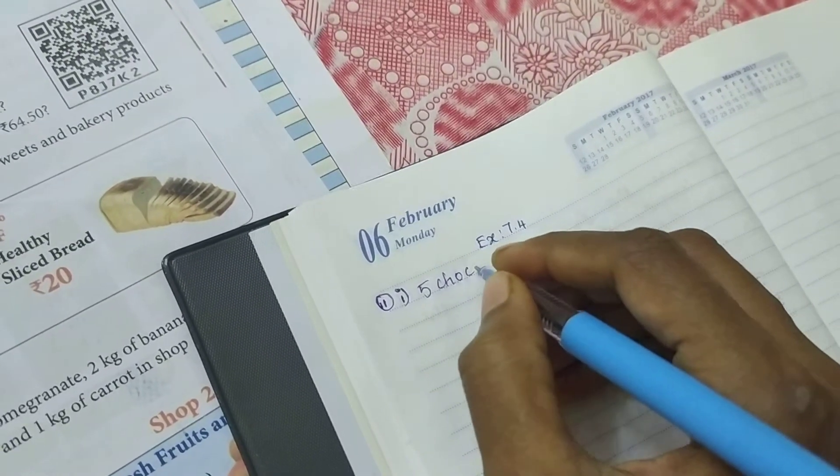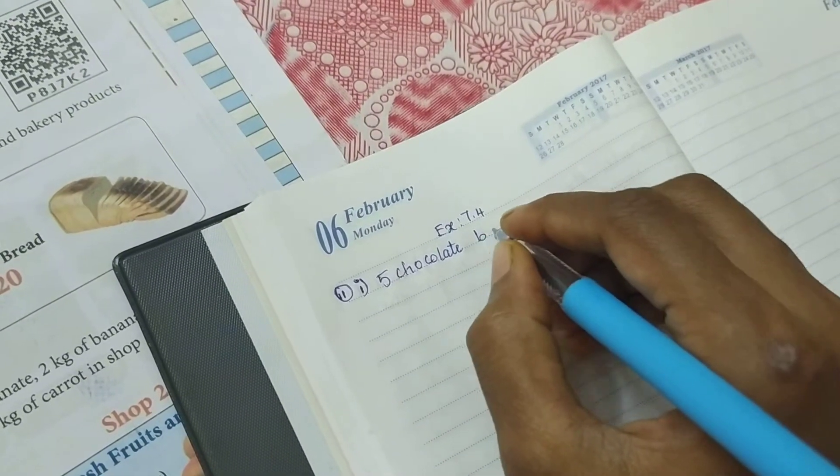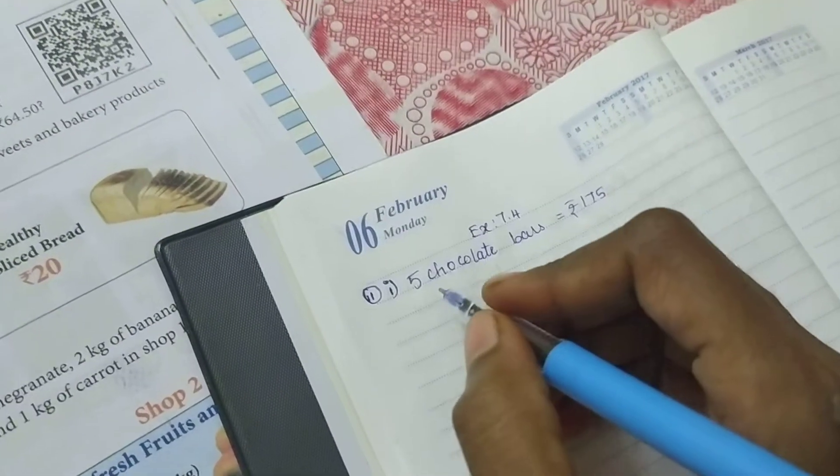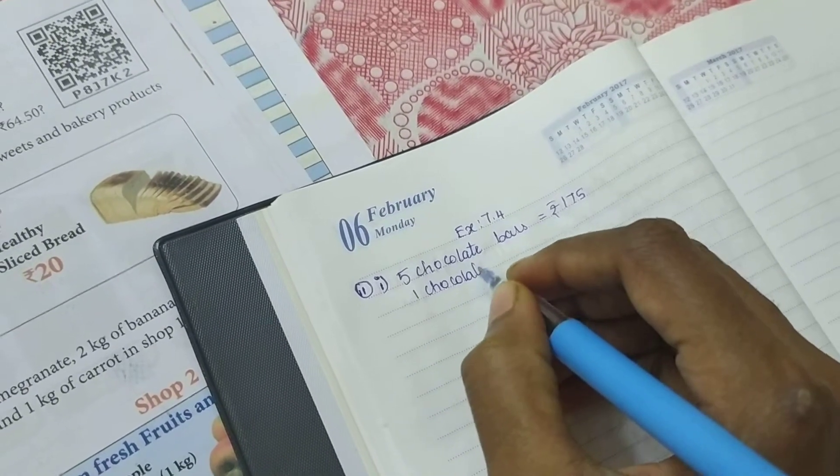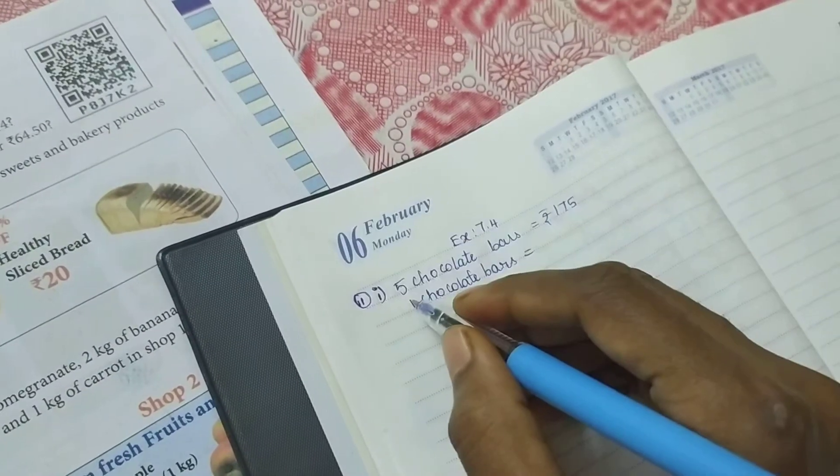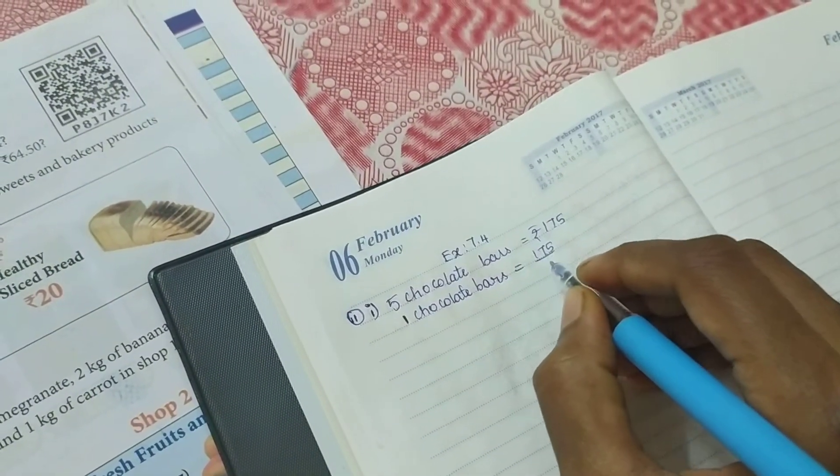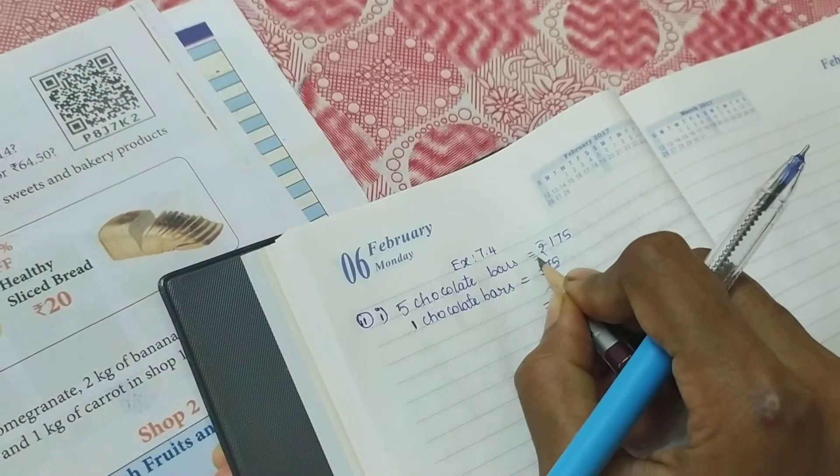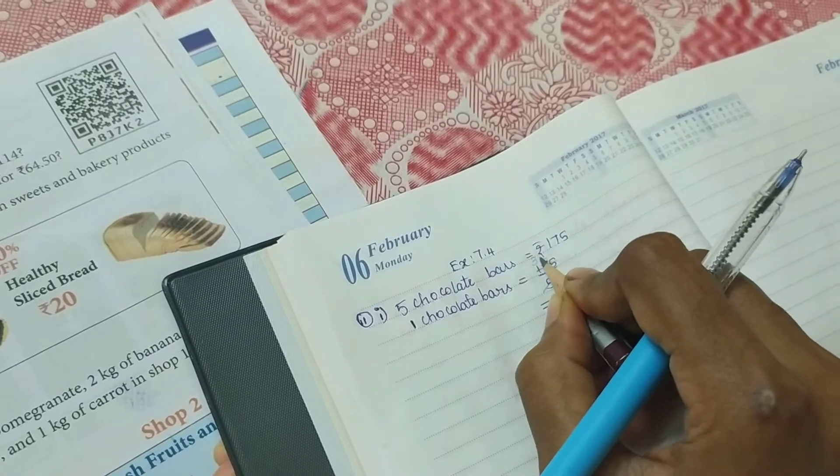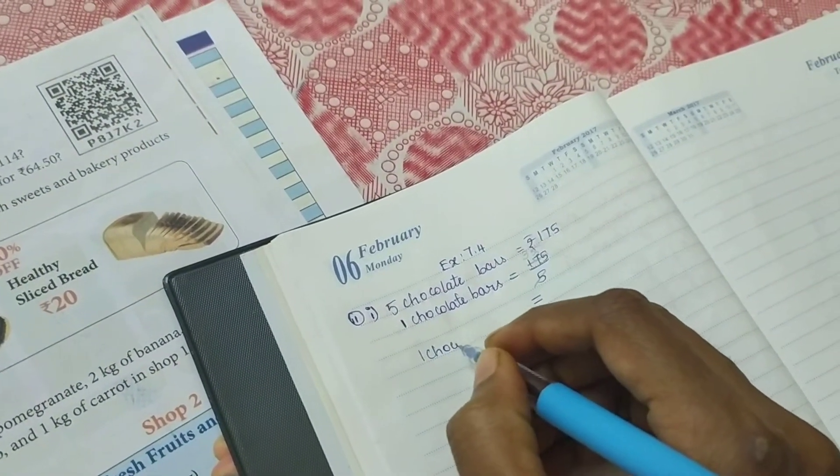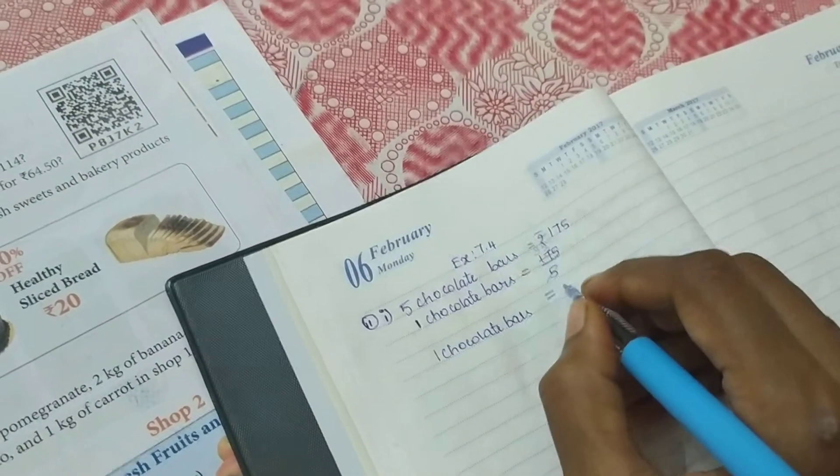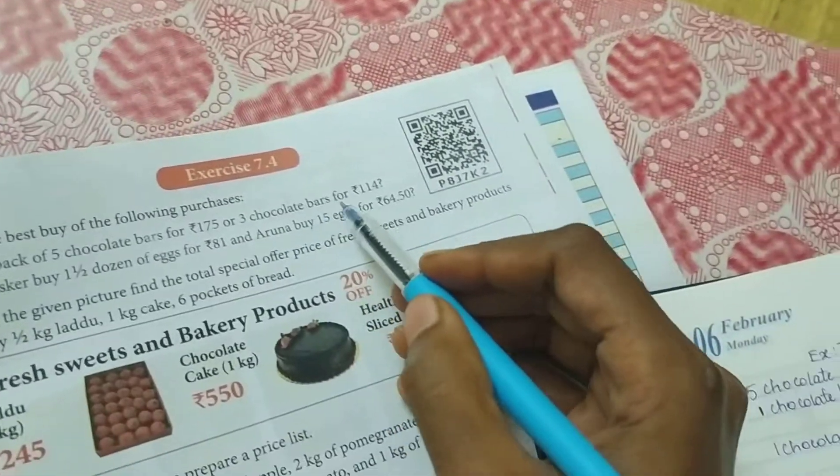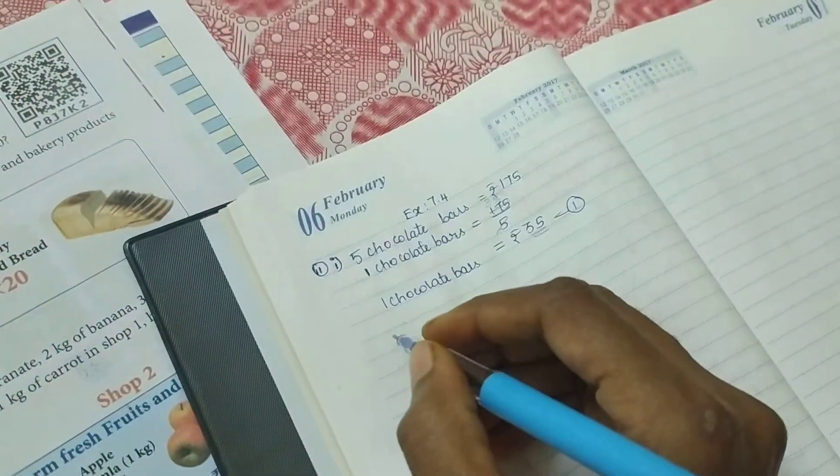First, they're asking about the chocolate bars. Five chocolate bars cost rupees 175. To find one chocolate's price, we divide 175 by 5. Canceling using the five times table: 15 times 5 is 75, with 2 remaining. 25 is 5 times 5. So for five chocolates, each chocolate costs 35 rupees.